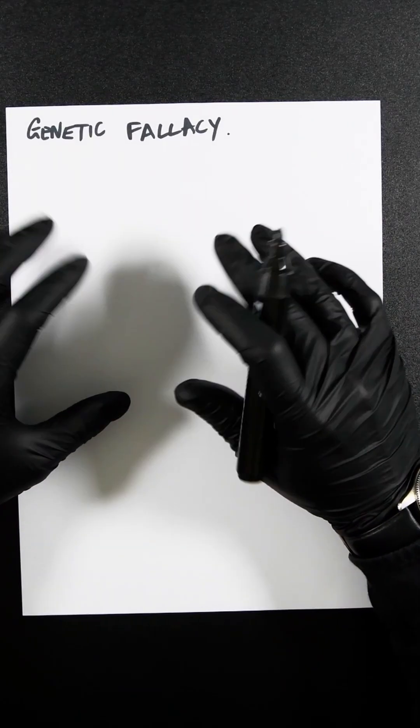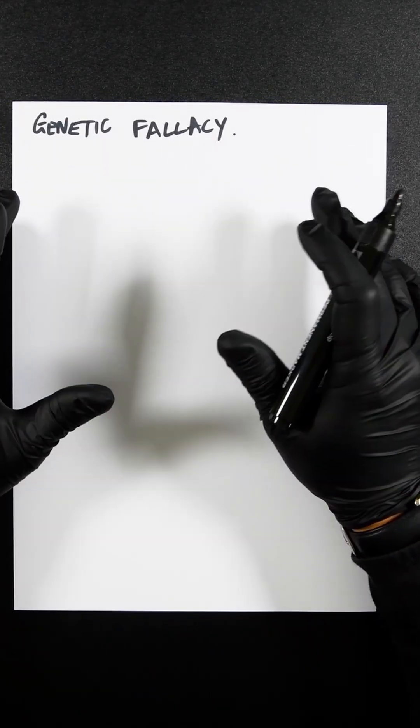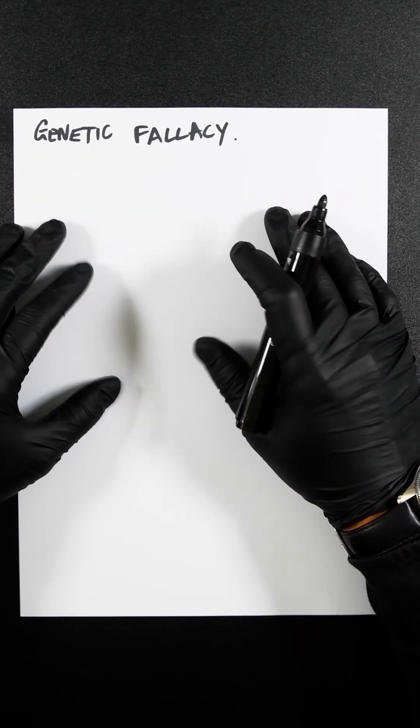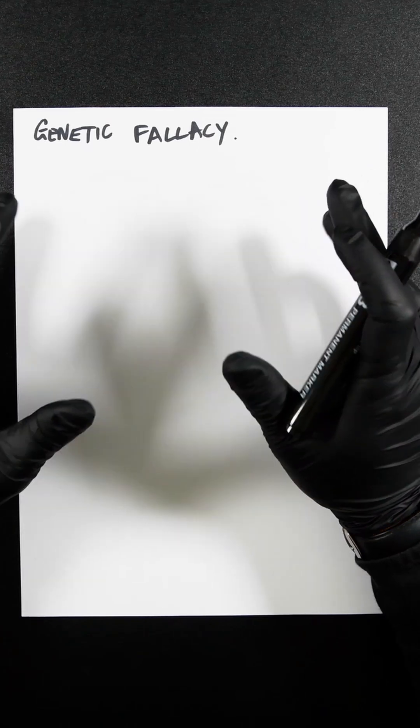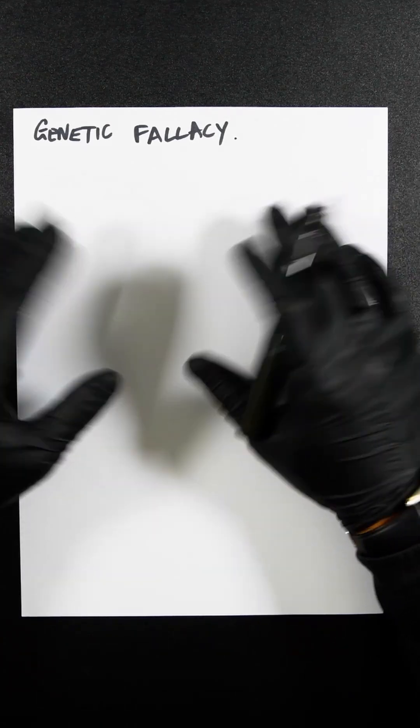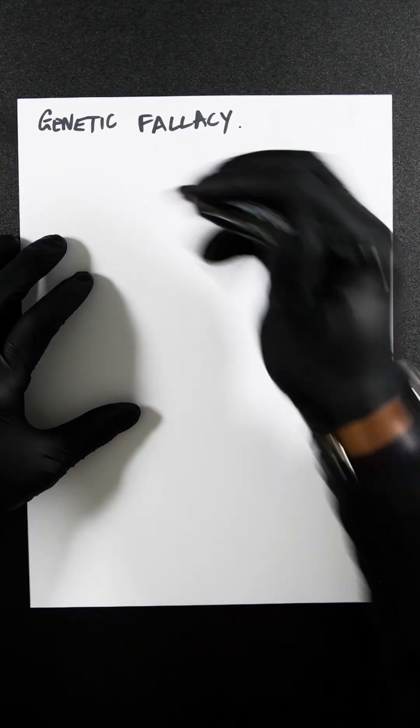Genetic fallacy occurs when somebody judges a claim, idea, or argument based solely on its origin rather than on its content or merit. The idea came from a bad source, so it must be false. The idea came from a good source, so it must be true.